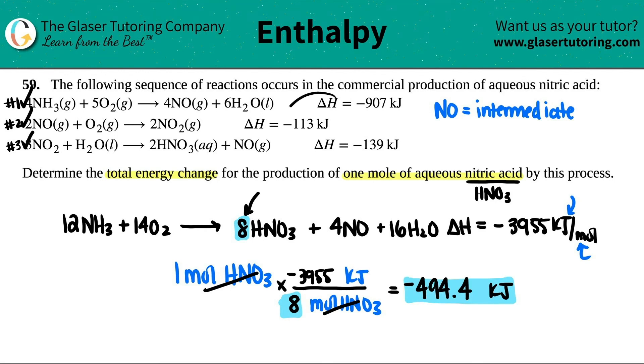Maybe since they only gave me three sig figs in the beginning and they didn't give me any decimals, maybe we'll just say 494. But I'll keep it as 494.4. It's whatever your teacher prefers.